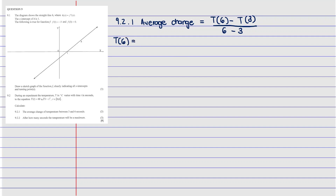We find T(6) by substituting 6 into the equation: 60 + 27(6) − 6³, which gives us positive 6. Then we find T(3): 60 + 27(3) − 3³, which gives us 114.